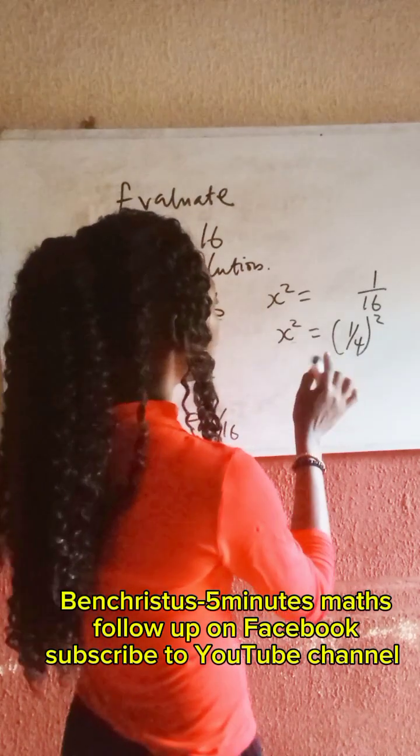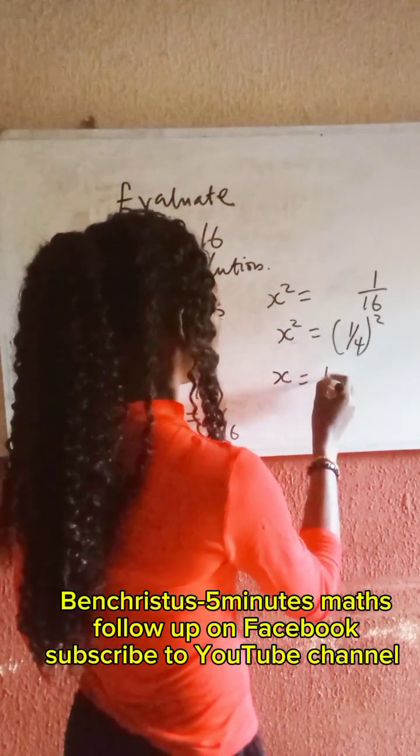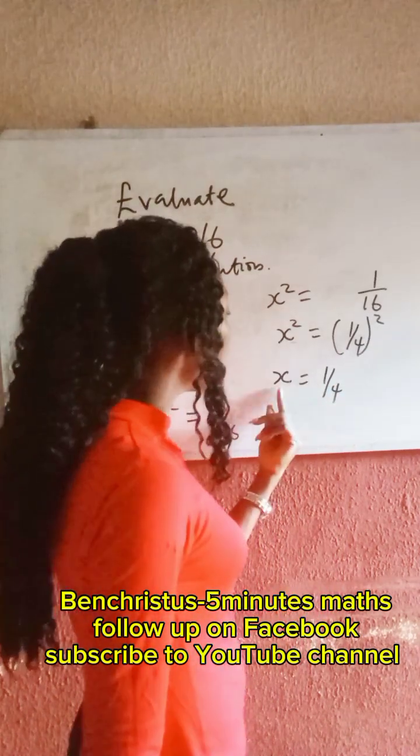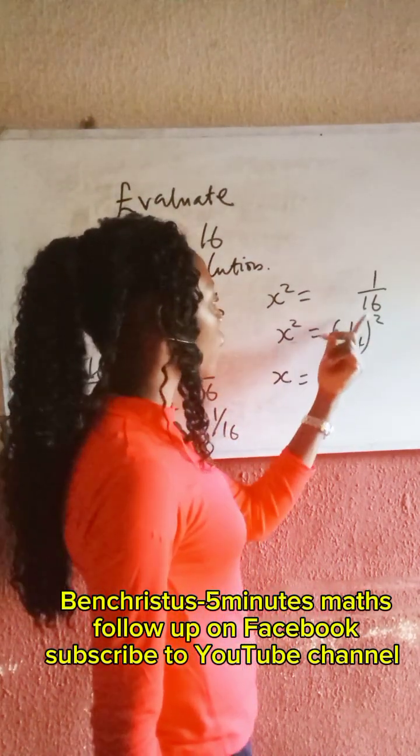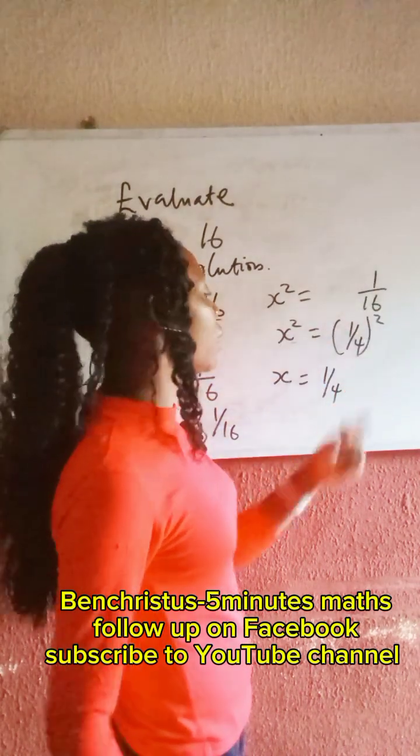So square, that means x, our x now is 1 all over 4. So square of this x gives us this and this. This, which is invariably 16.